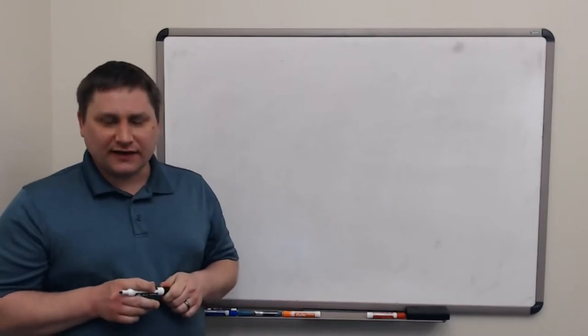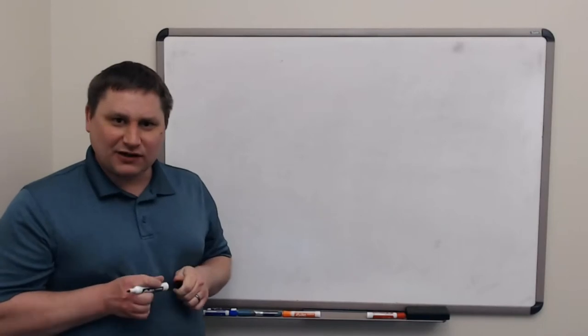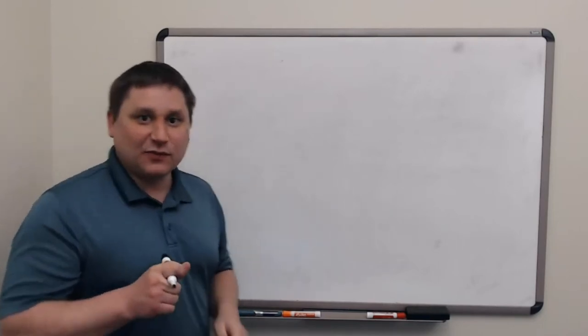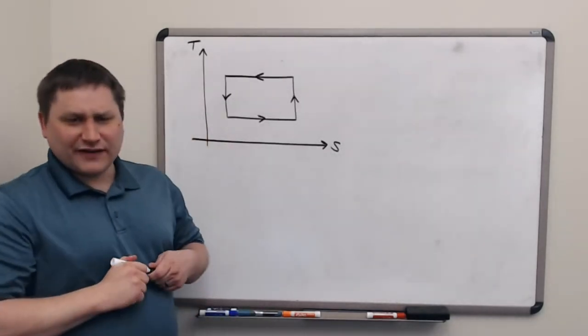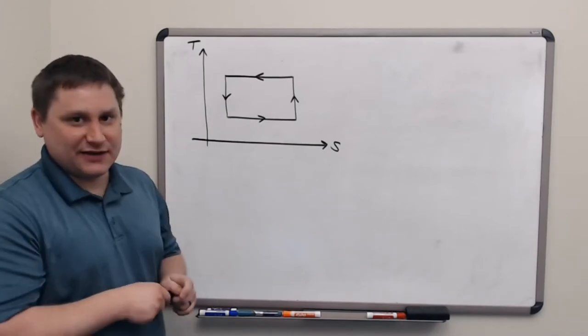In this video we're going to look at the Carnot cycle, but this time run in a counterclockwise direction on the PV or TS diagram. This is what it looks like. I've drawn the TS diagram because the Carnot cycle is a rectangle, it's a lot easier to draw than on the PV diagram.